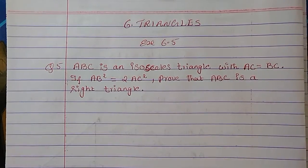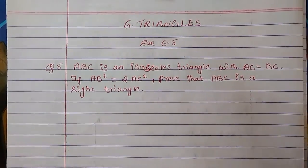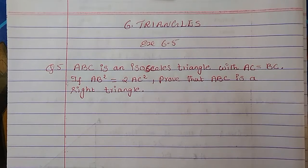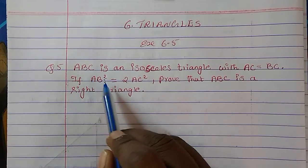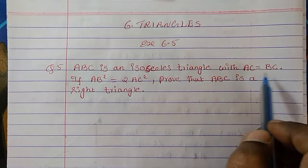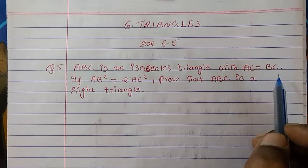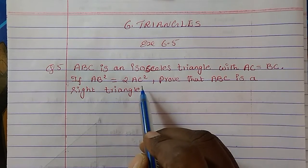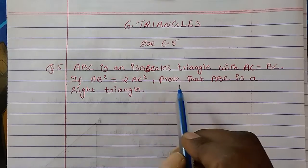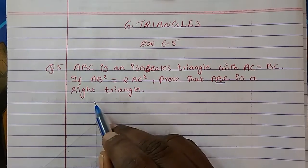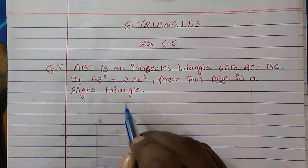Hi everyone, welcome to Mash Math. Today we are going to study Chapter 6 Triangles, Exercise 6.5, Question 5. ABC is an isosceles triangle with AC equal to BC. If AB square is equal to 2AC square, prove that ABC is a right triangle.